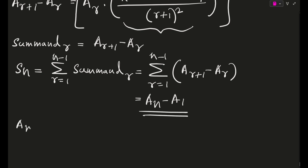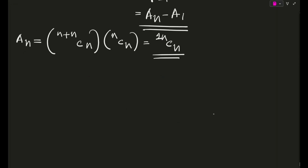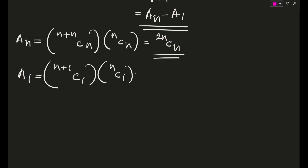Now, a_n: substituting r = n into a_r = n+r_C_r · n_C_r gives 2n_C_n · n_C_n = 2n_C_n, since n_C_n = 1. And a_1: substituting r = 1 gives n+1_C_1 · n_C_1 = (n+1) · n = n(n+1). So the final value of the summation is S_n = 2n_C_n − n(n+1).